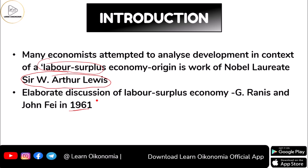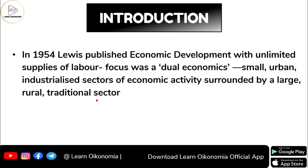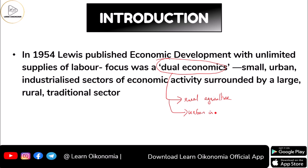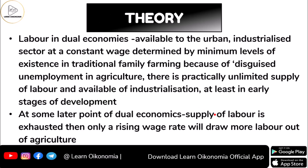In 1954, Lewis published his famous work 'Economic Development with Unlimited Supply of Labor,' which focused on a dual economic character. By dual economy, we mean two types of economy: one would be a rural sector where you have agriculture, and the other would be an urban sector where you have industry. That is why it is considered a dualistic model.